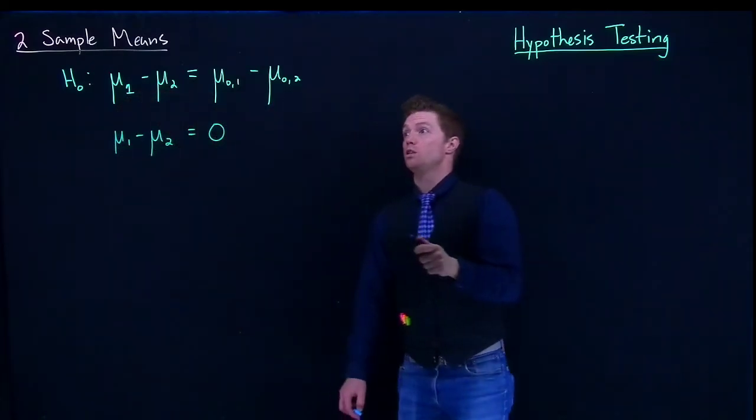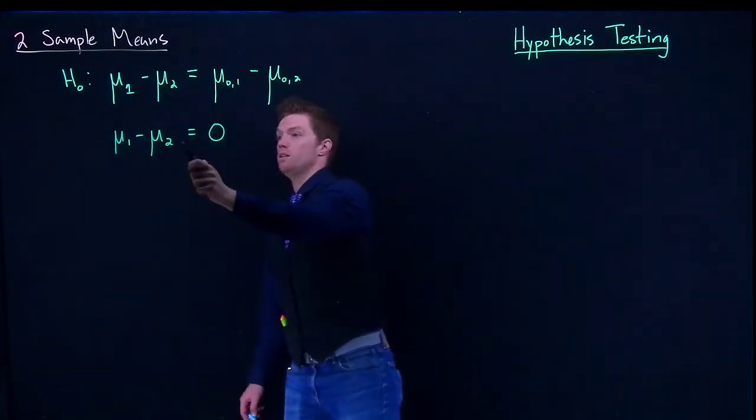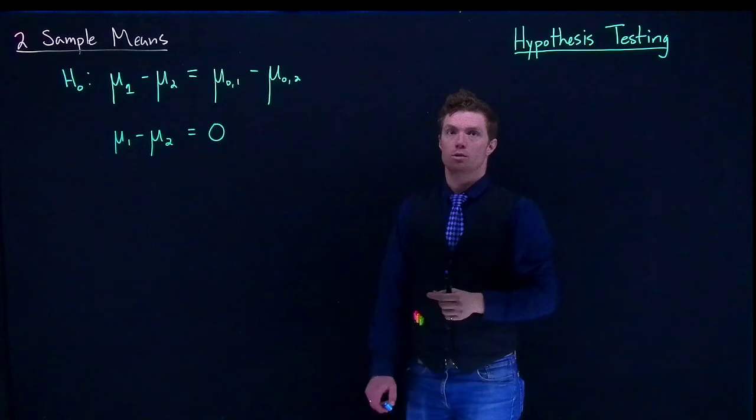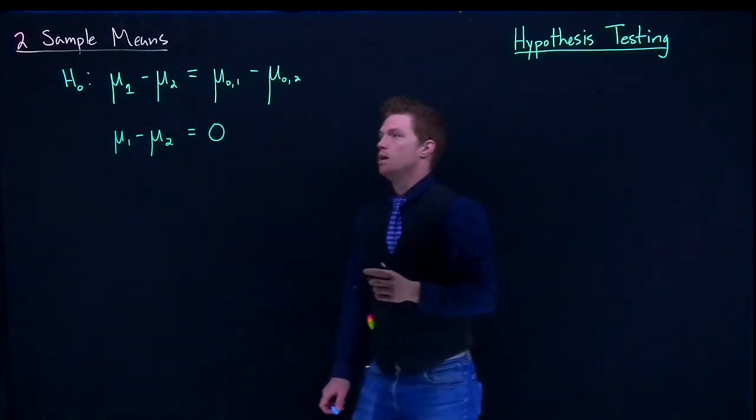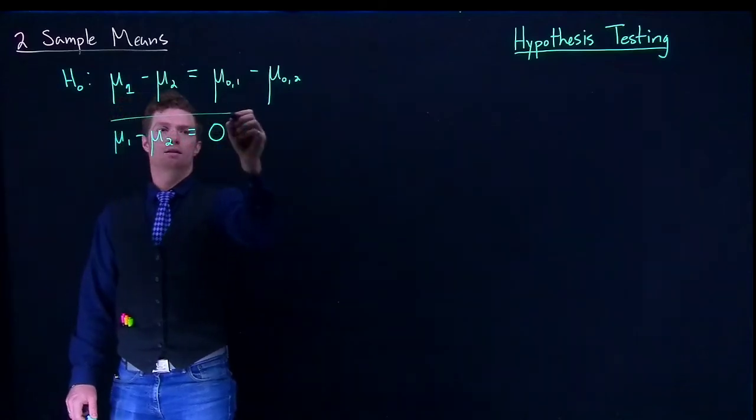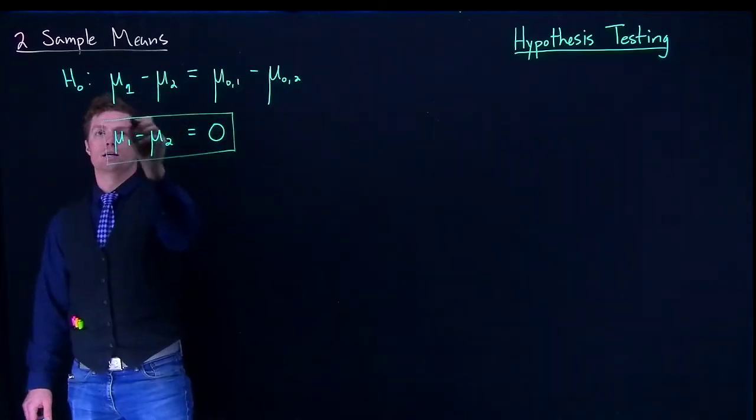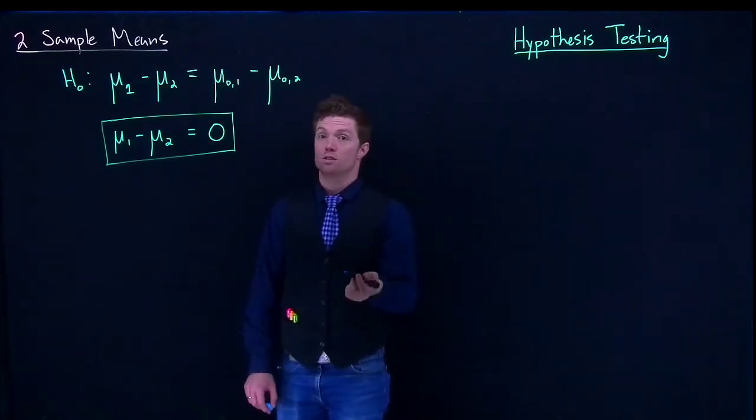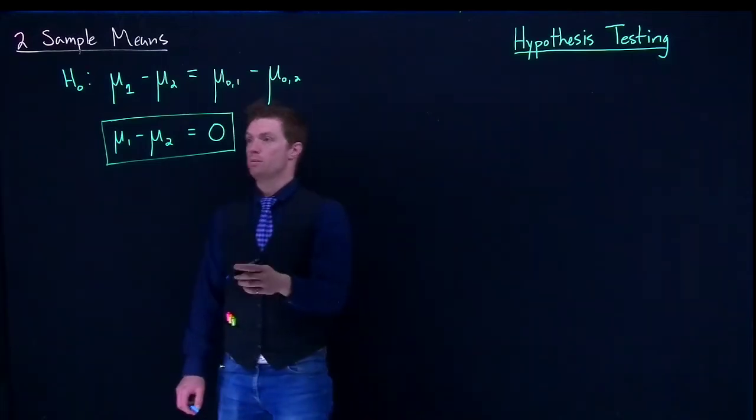Because if the true difference between these two guys, if they are the same, it means that the difference between them is going to be 0. So typically I like writing it in this format. This is the way that I like to write my null hypothesis. But there's another very common way that you'll see a lot, and so I want you to be able to see it as well.